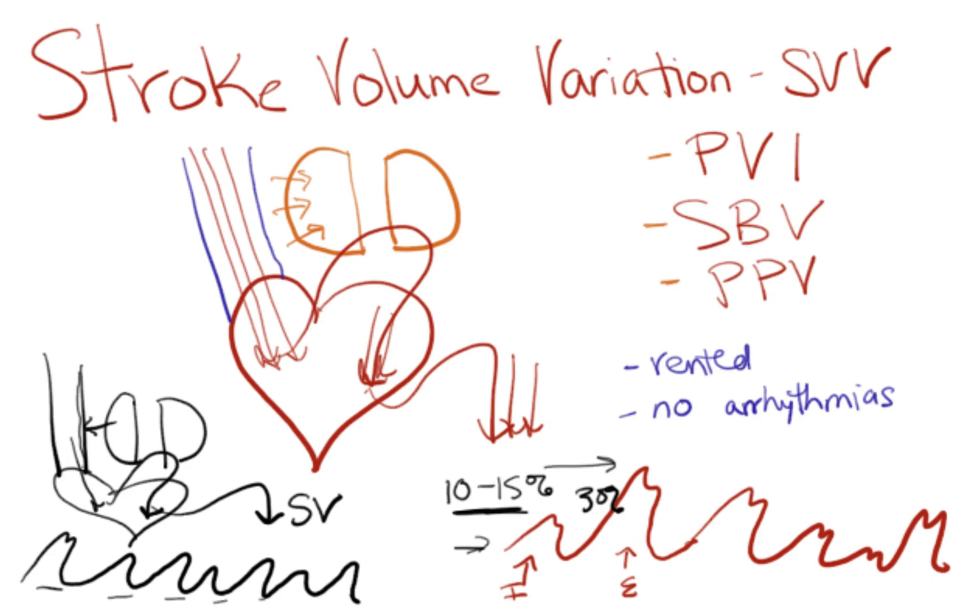And so your stroke volume is pretty consistent, and your pleth is pretty consistent. So you have a low stroke volume variation. So the easiest way to remember this is to work through it and understand the forces between your lung and your vena cava and how that preload affects cardiac output. The other way to memorize it is high is dry.